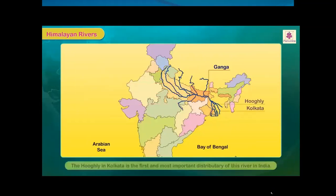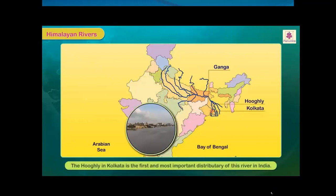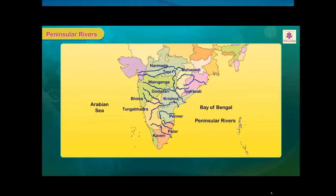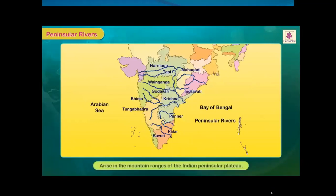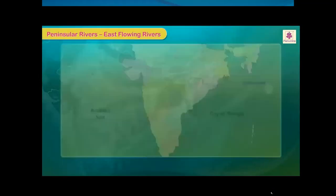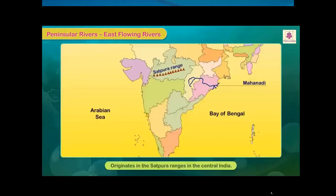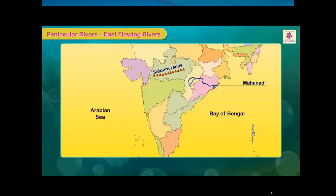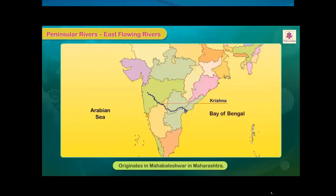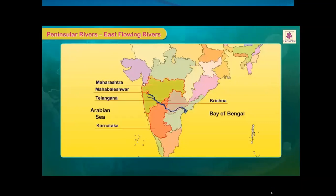The Hooghly in Kolkata is the first and most important distributary of the Ganga in India. Peninsular rivers arise in the mountain ranges of the Indian peninsular plateau. The Mahanadi originates in the Satpura ranges in central India and travels through Chhattisgarh, entering the Bay of Bengal through Odisha. The Krishna originates in Mahabaleshwar in Maharashtra and flows through Maharashtra, Karnataka, Telangana and Andhra Pradesh, making it one of the longest rivers in India.